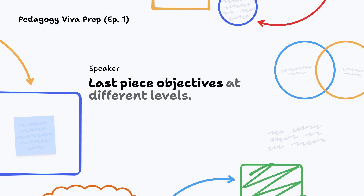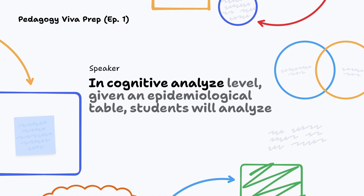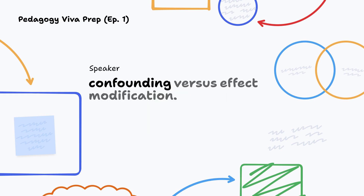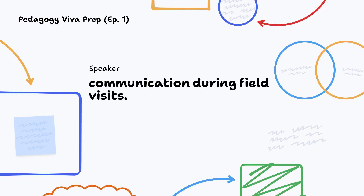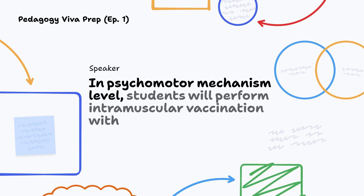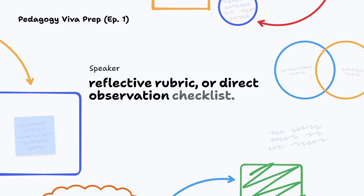Objectives at different levels — one example each. In cognitive at the analyze level: given an epidemiological table, students will analyze confounding versus effect modification. In affective at the organized level: students will consistently prioritize respectful communication during field visits. In psychomotor at the mechanism level: students will perform intramuscular vaccination with correct asepsis. Tie each to ABCD, then pick the right assessment — case analysis, reflective rubric, or direct observation checklist.